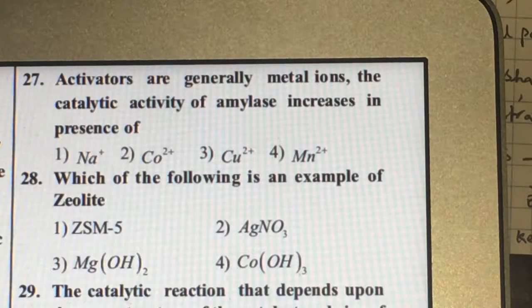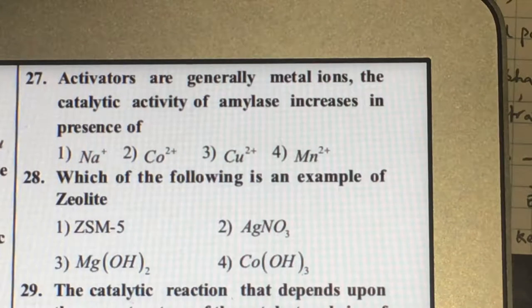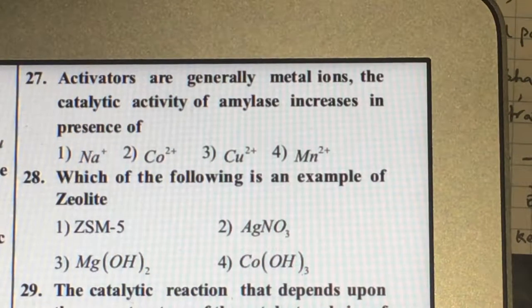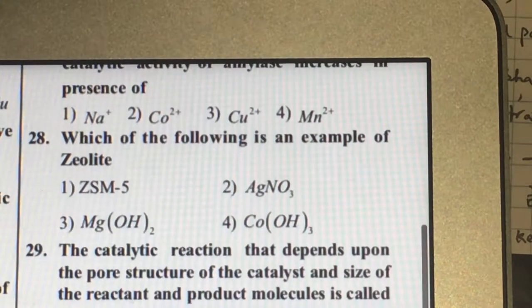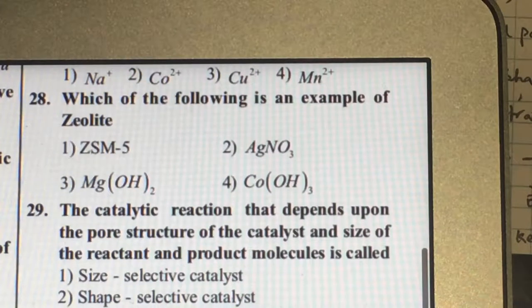Zeolites are shape specific and shape selective. They are used to convert alcohol into petrol, diesel, gasoline, whatever.